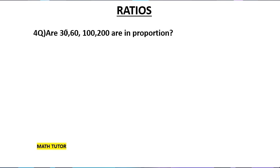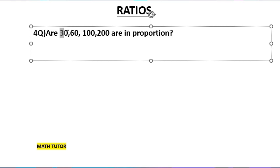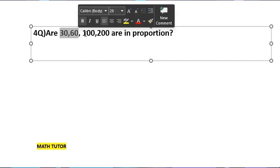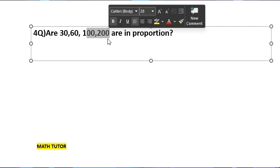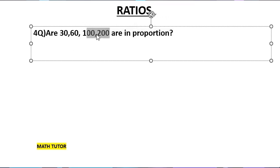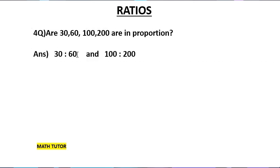Fourth question: Are 30, 60, 100, 200 in proportion? Whenever you do a problem like this, remember: first and second terms form one ratio, and third and fourth terms form the second ratio. So the first ratio is 30 is to 60, and the second ratio is 100 is to 200. To check if they are in proportion, we check whether these ratios are equal.